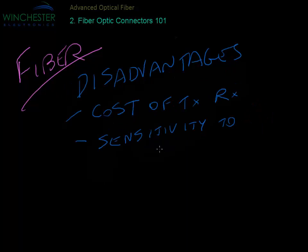Let's look at the disadvantages of fiber. Assuming that you need the speed or the size of fiber, some of the disadvantages that come along with that are the cost of the transceivers. The other disadvantage is there's a sensitivity to any kind of contamination, especially dust in the air or oils off the skin.